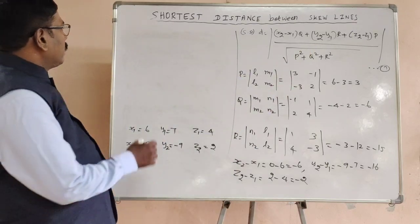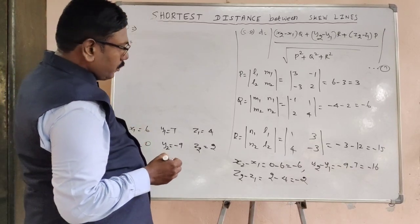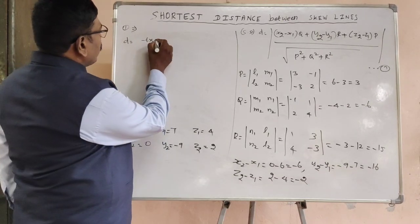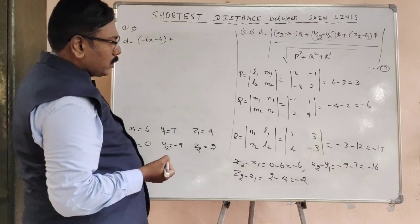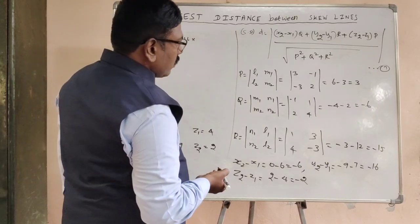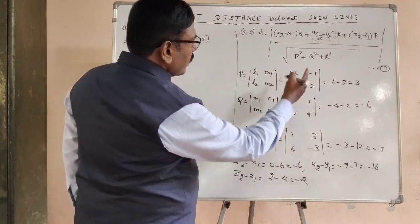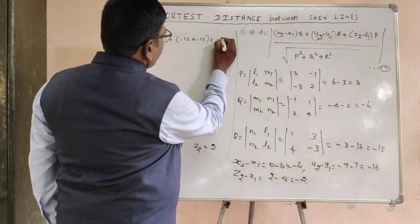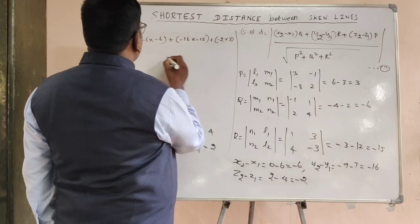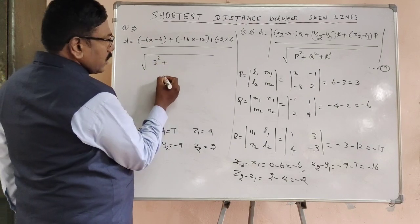Now substitute all the values in equation number 1. We get the shortest distance D equals x2 minus x1, minus 6, into Q, minus 6, plus y2 minus y1, minus 16, into R, minus 15, and z2 minus z1, minus 2, into P, 3, divided by root of P square plus Q square plus R square.